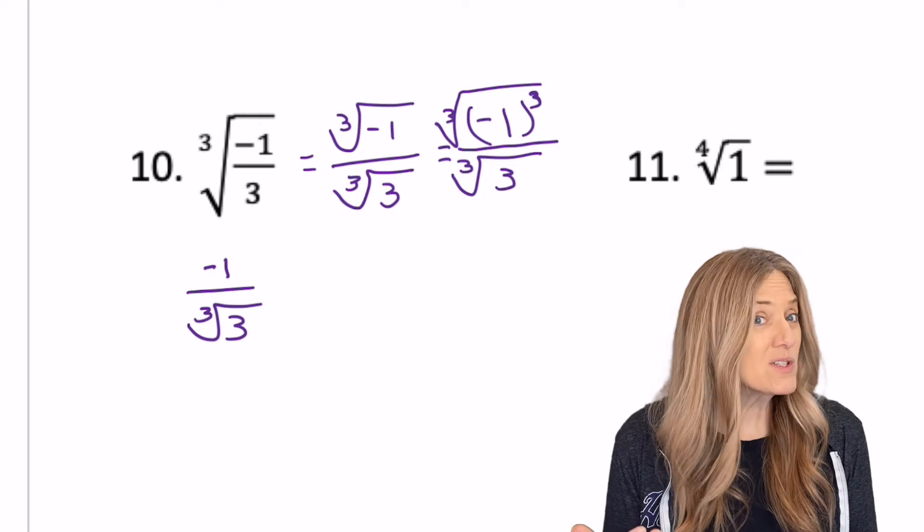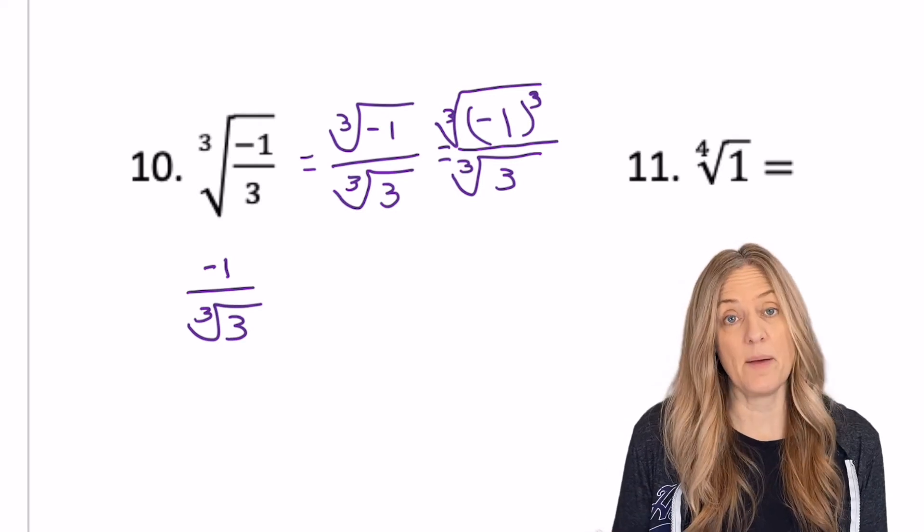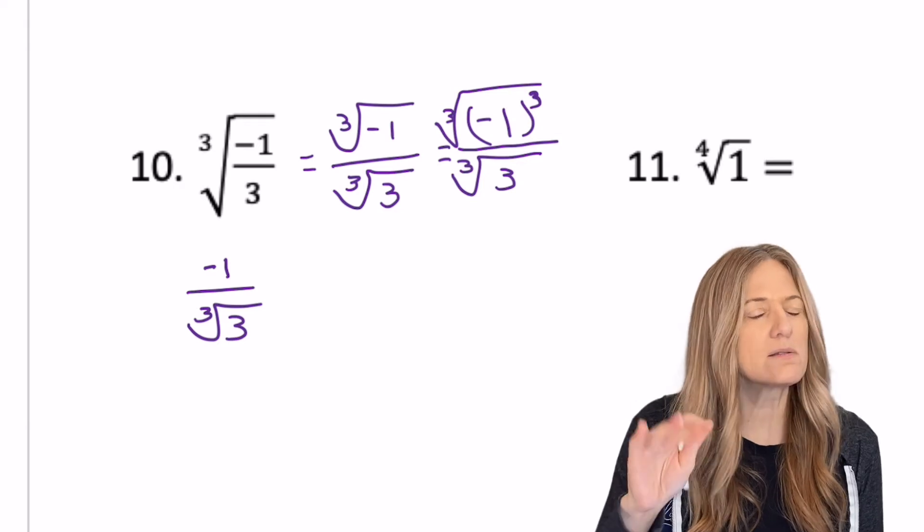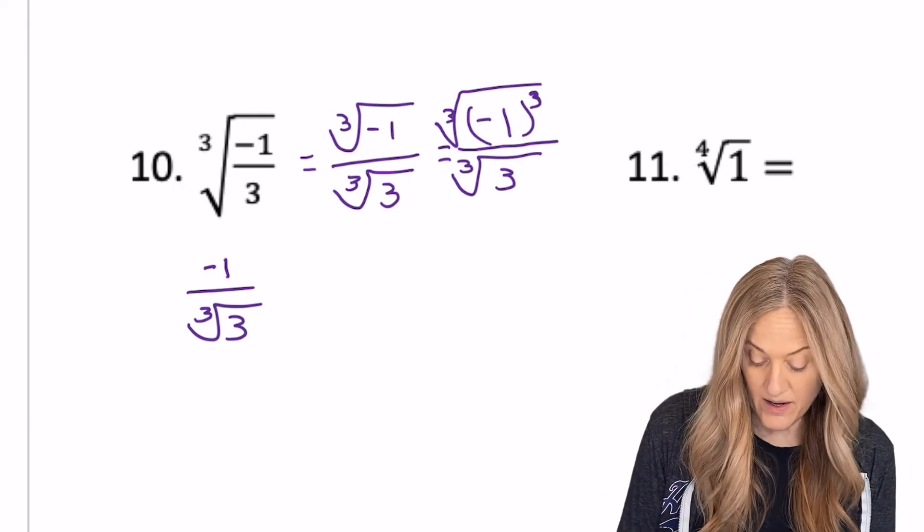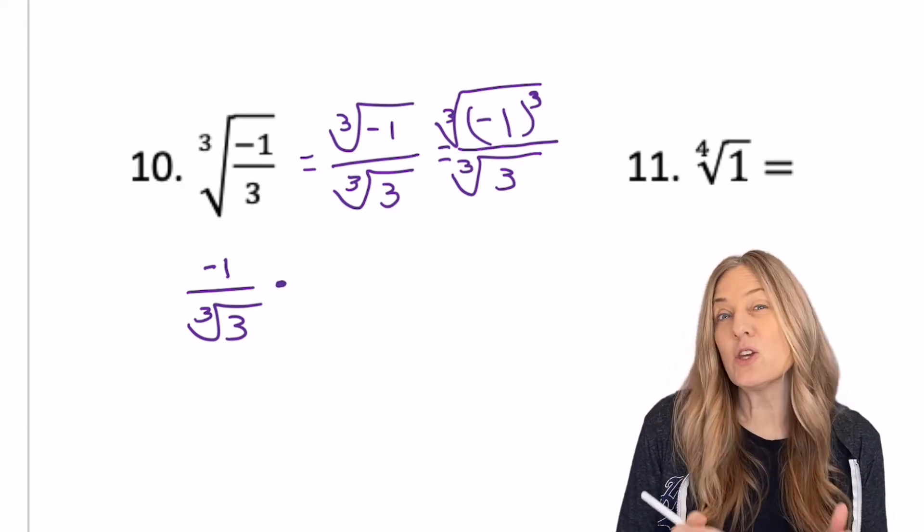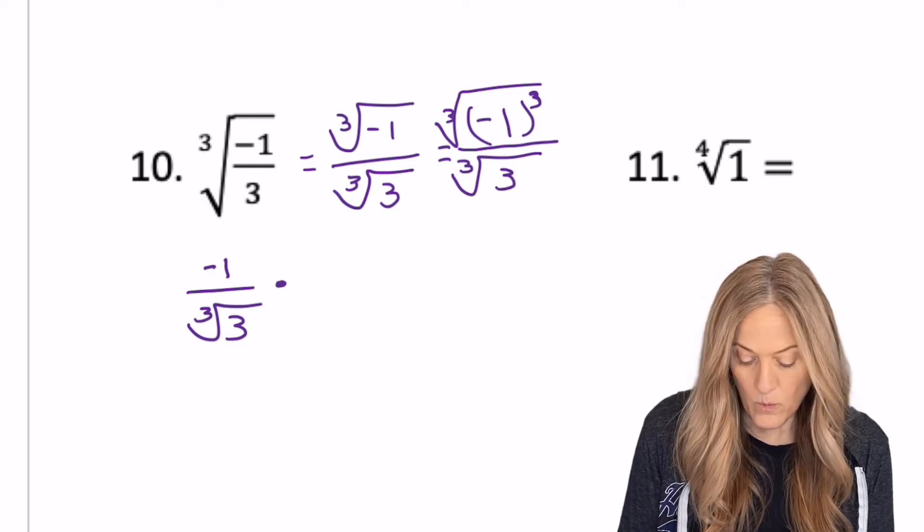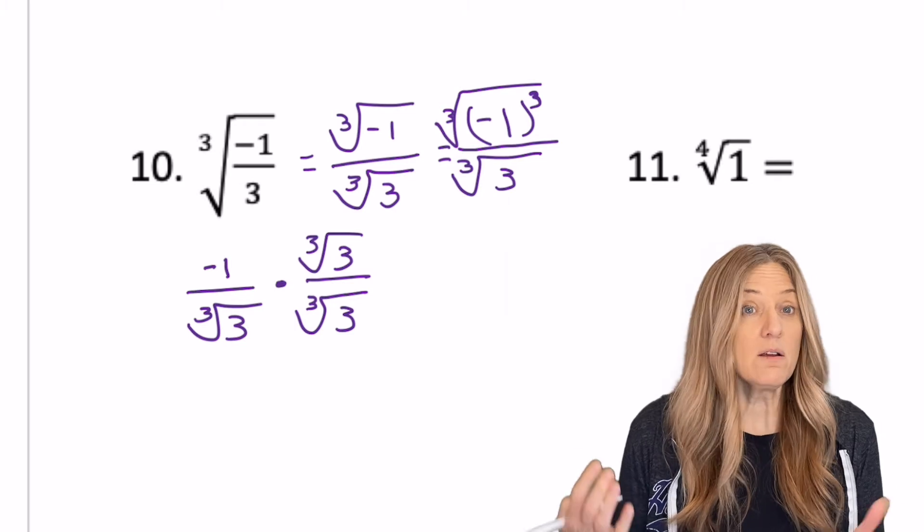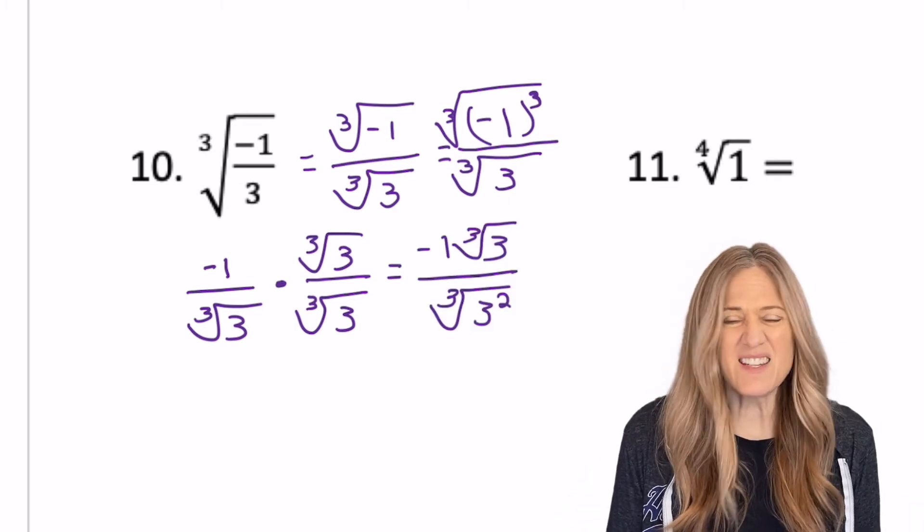But do you remember that usually we don't leave radicals in the denominator? But this isn't just a square root. So if you've learned any shortcuts, slow down. Let's talk about this. I don't want to leave the cube root in my denominator. Well, is it enough to just multiply by the cube root of three over the cube root of three? Create a form of one? No, that's not enough.